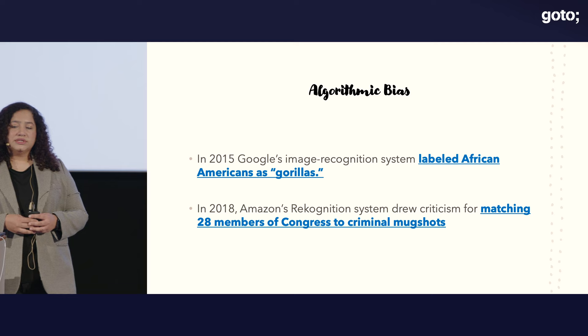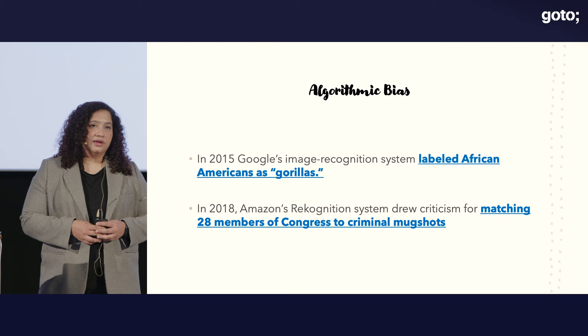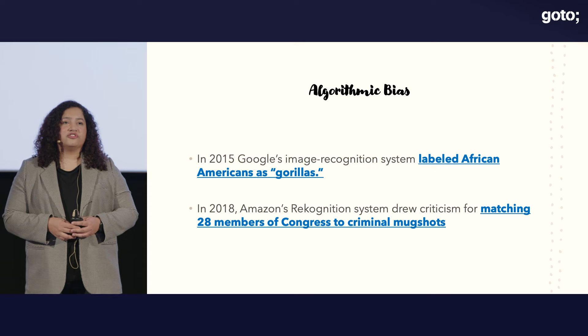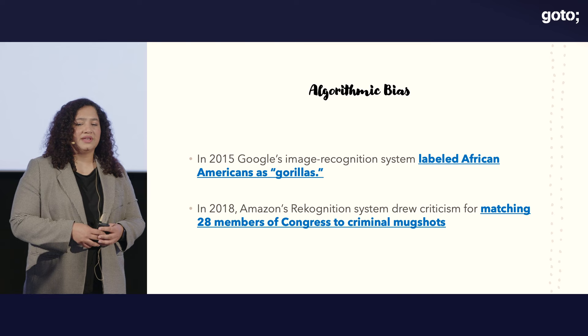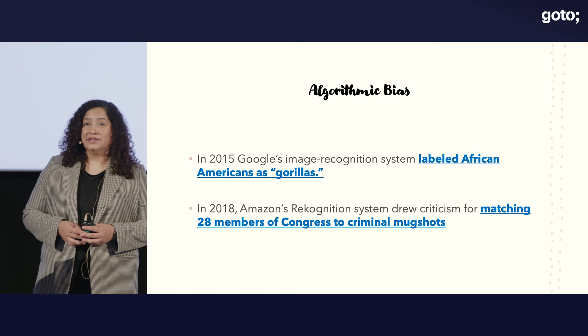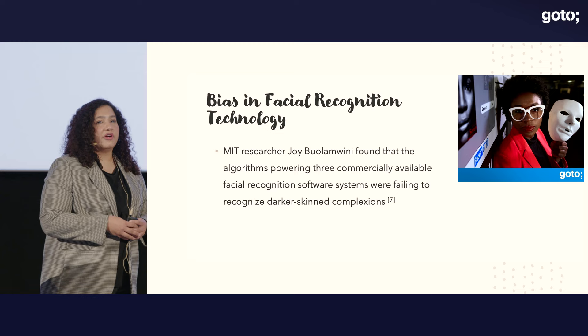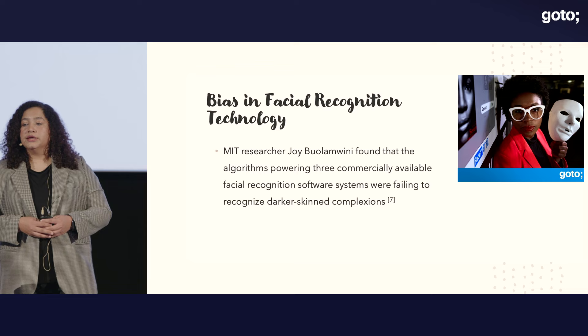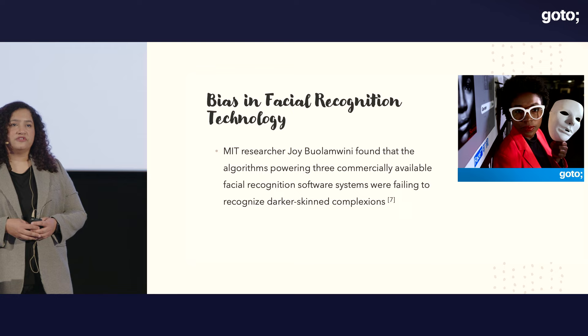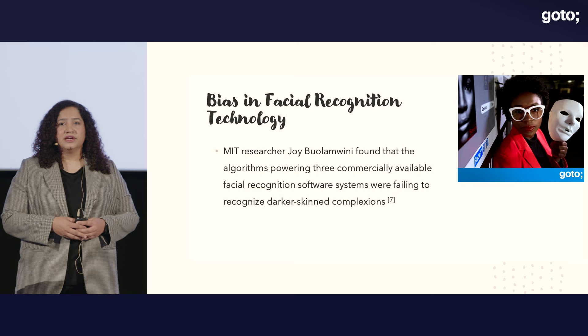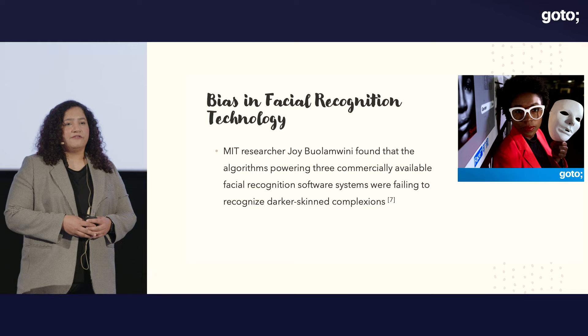These algorithms were originally designed to address the bias that was in us humans — to make decision-making unbiased, more rational, and less discriminatory. But now in the media we hear a lot about discrimination from machines. In 2015, Google's image recognition system labeled African Americans as gorillas. Three years later in 2018, Amazon's recognition system drew criticism for matching 28 members of Congress to criminal mug shots just based on their skin color. A recent study also found that facial recognition systems from IBM, Microsoft, and a Chinese image recognition system were all unable to identify a Black woman.